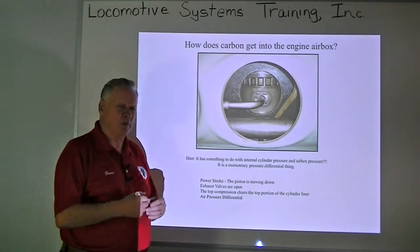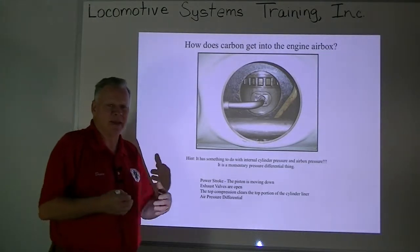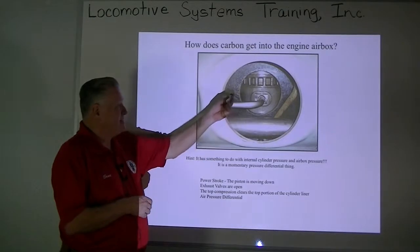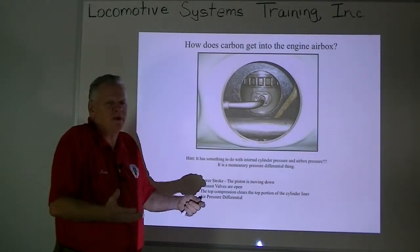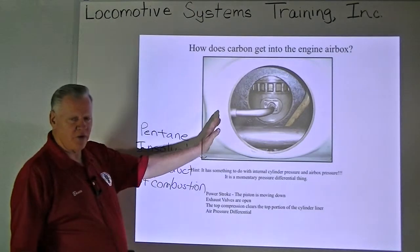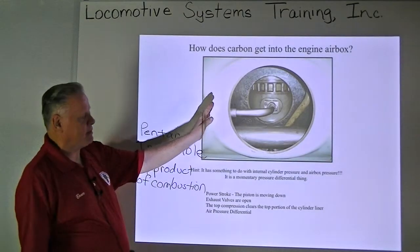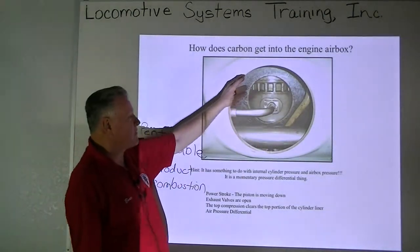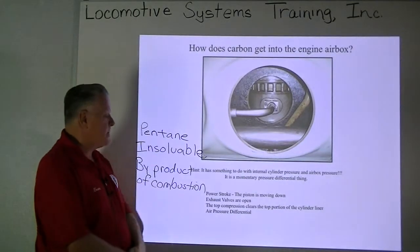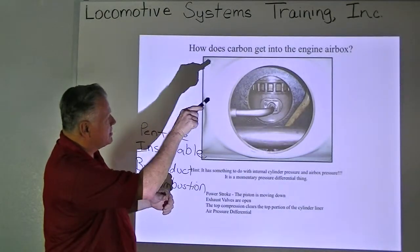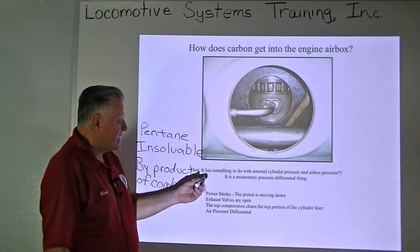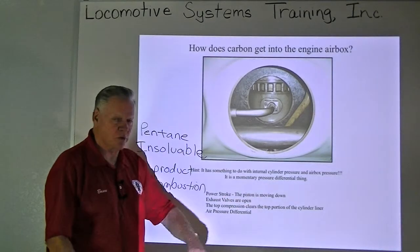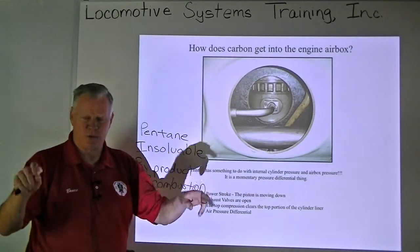What is carbon? The fancy word for carbon is called pentane insoluble. Pentane is fuel — actually unburnt fuel — and insoluble means that it kind of sticks there; it doesn't break down. One of the things I wanted to clarify from episode seven is how do we get this carbon buildup, this oily mixture of carbon and oil inside the airbox? The hint is it has something to do with internal cylinder pressure and airbox pressure — it is a momentary pressure differential.